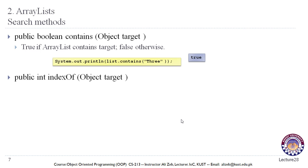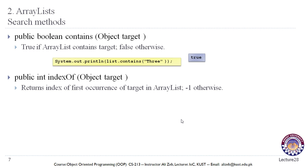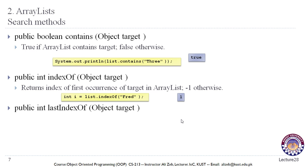The public int indexOf(Object target) method returns the index of the first occurrence of the target in the ArrayList. If the target is not found, it returns -1. For example, looking for the index of 'fred' in our list should return one. The lastIndexOf method works the same way except it returns the index of the last occurrence.